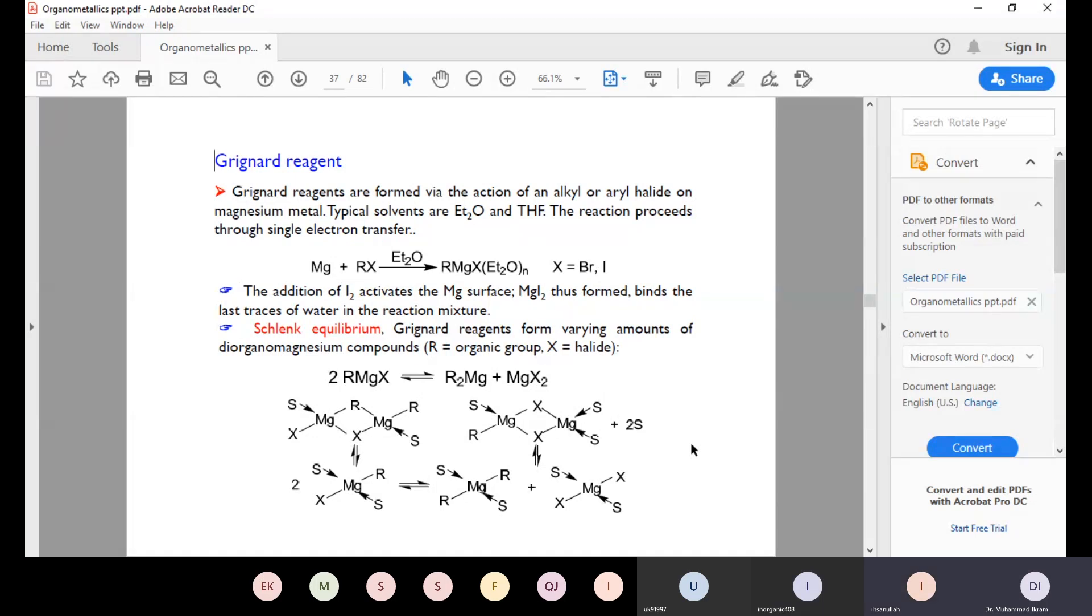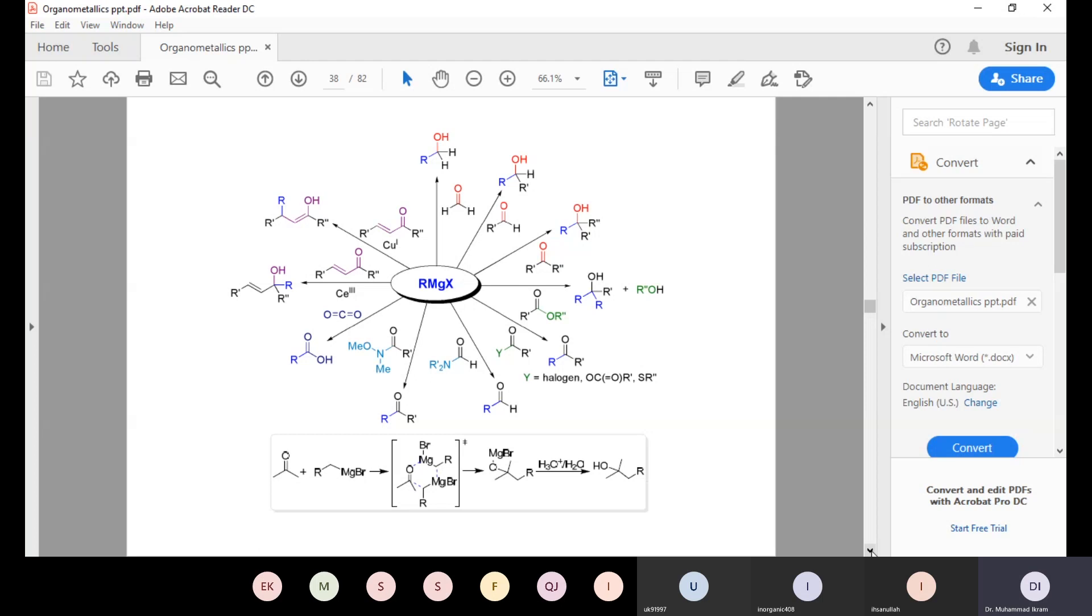Grignard reagents form varying amounts of diorganomagnesium compounds in equilibrium. This is RMgX in equilibrium with R2Mg plus MgX2.